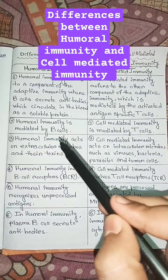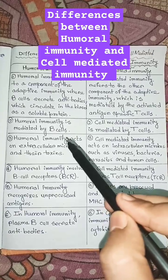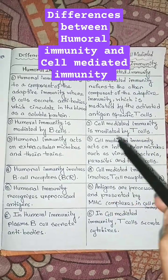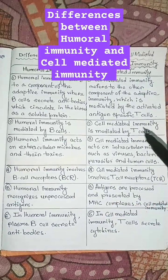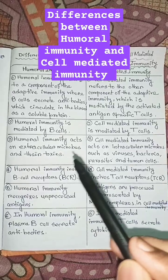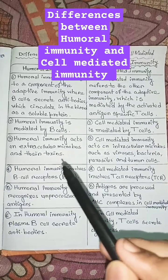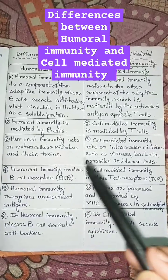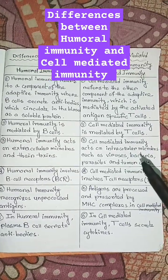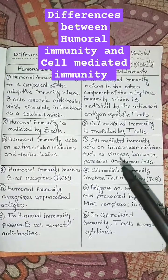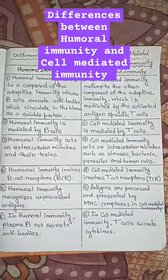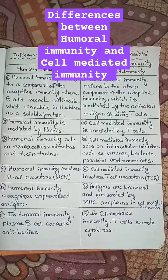Humoral immunity is mediated by B-cells but cell-mediated immunity is mediated by T-cells. Humoral immunity acts on extracellular microbes and their toxins, but cell-mediated immunity acts on intracellular microbes such as viruses, bacteria, parasites, and tumor cells.